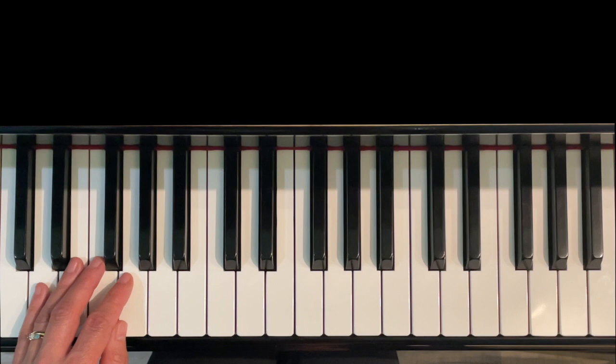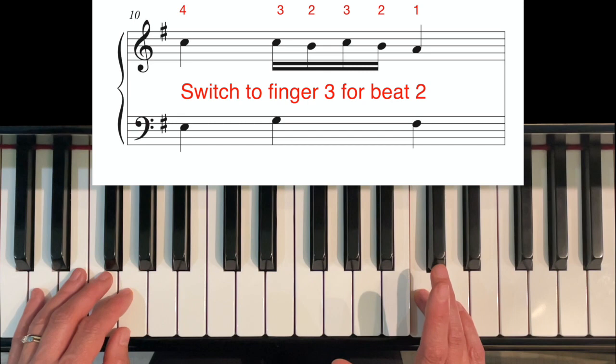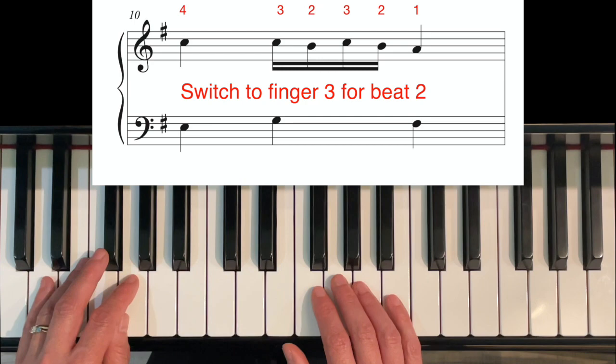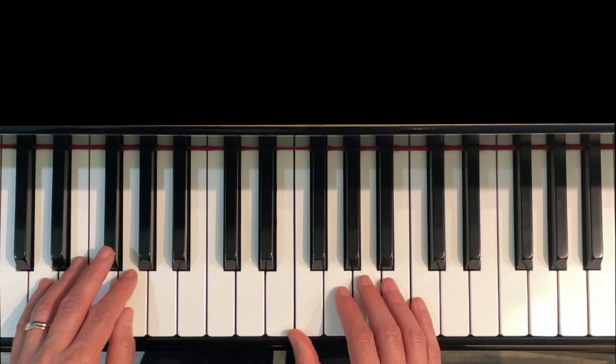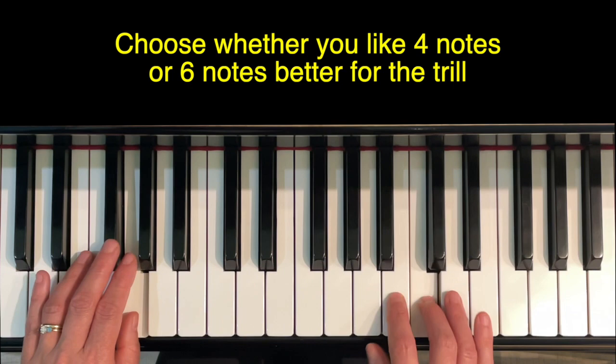If you look above, I'm going to give you two options for the trill. The one I usually like to play is a written-out four-note trill, just like four sixteenth notes. The only tricky thing is starting on beat one with finger four—we're going to switch to finger three to play the trill because finger three is a stronger finger. If you'd like to be a little bit more elaborate, you can add two more notes to the trill and have it be a little bit more like a triplet in flavor. So choose which one you like better.